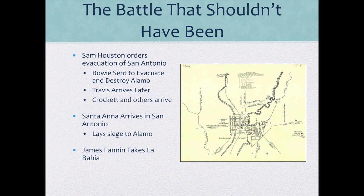Going back to the Alamo — it's really a battle that should never have happened. Sam Houston, as commander, had ordered the evacuation of Texans from San Antonio. However, when Jim Bowie got there and was ordered to destroy the Alamo, he decided not to. Travis arrived later, and they both decided to stay and fight. When Davy Crockett and others came in, they too decided to stay and fight to preserve the Alamo. Once Santa Ana arrived and laid siege, he offered them several times the ability to surrender and leave, but they refused. Thereafter he ordered the overrunning of the Alamo and their execution.